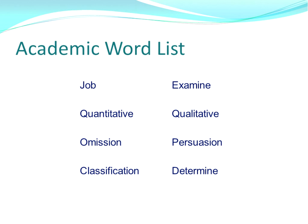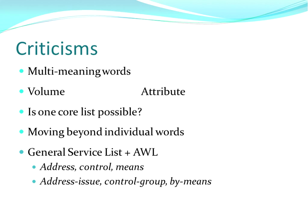Another criticism is that the AWL doesn't deal with multi-meaning words and how they behave differently in different disciplines. Take the word 'volume' — in science it's typically the volume of a liquid, but in social science it's more typically a volume of a journal. Similarly 'attribute' — as a noun meaning a characteristic is more common in business, while 'to attribute' as a verb is more common in science. Some argue that one core list is not possible and you need discipline-specific lists, while others argue that 'theory' is 'theory' regardless of discipline.